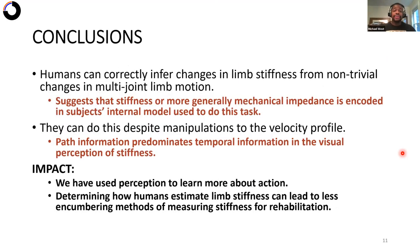So to conclude, we found that humans can correctly infer changes in limb stiffness from non-trivial changes in multi-joint limb motion. And they can do this despite the manipulations to the velocity profile. And this suggests that stiffness or more generally mechanical impedance is encoded in subjects' internal model used to do this task.